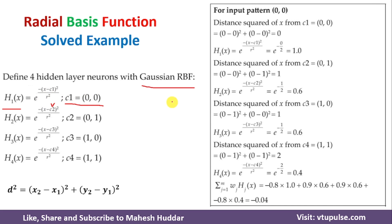We will apply one input at a time and classify it. The first input pattern is 00 and the first center is also 00. We calculate the distance from input pattern 00 to the first center: (0 minus 0) squared plus (0 minus 0) squared, which equals 0. So h1(x) is equal to e raised to minus 0 divided by 2, which equals 1.0.